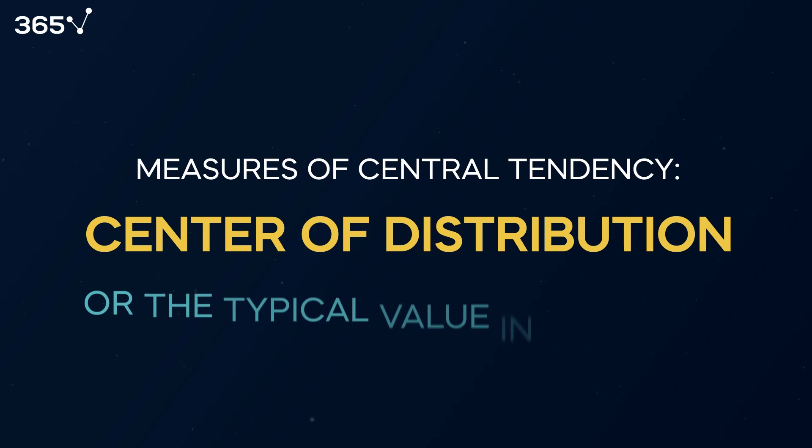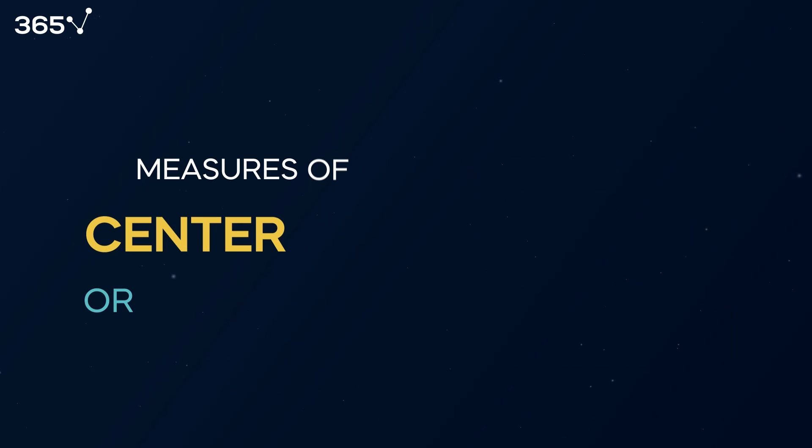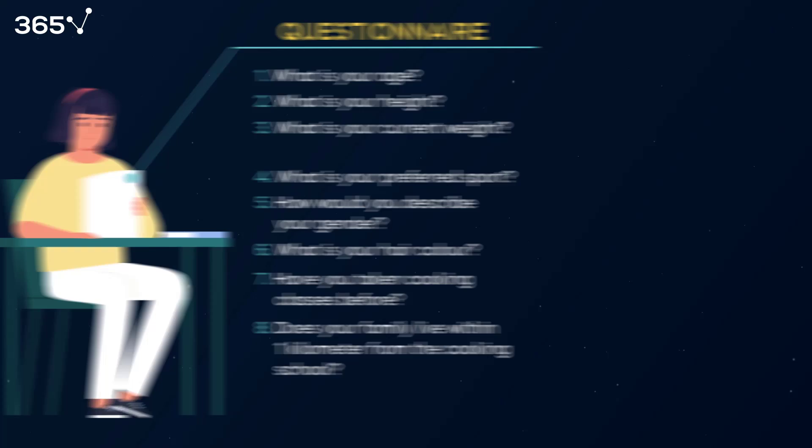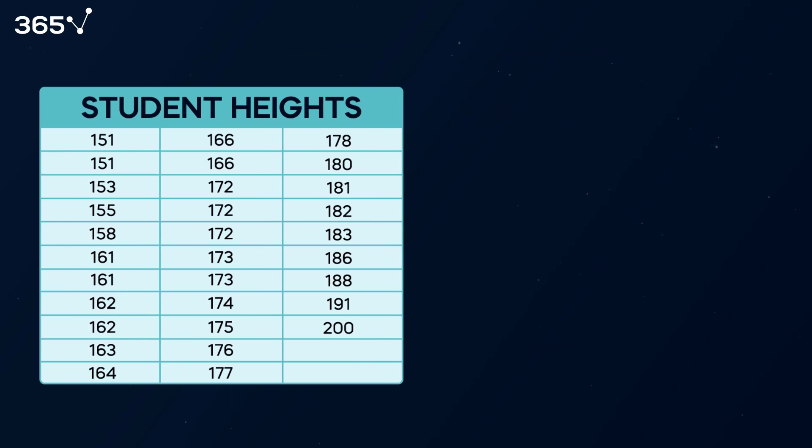We're ready to introduce the first statistical metrics in our crash course: the measures of central tendency. Such metrics give us an idea about the center of distribution, or the typical value in that dataset, which might sound more complex than it is. Consider that the 31 students who submitted the questionnaire were asked to fill in their heights, numerical data that can be added. These are the student heights. The measures of central tendency are mean, median, and mode.